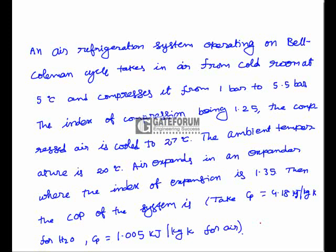An air refrigeration system operating on the Bell-Coleman cycle takes in air from the cold room at minus 5 degrees centigrade and compresses it from 1 bar to 5.5 bar, the index of compression being 1.25. The compressed air is cooled to 27 degrees centigrade. The ambient temperature is 20 degrees centigrade. Air expands in an expander where the index of expansion is 1.35. Find the COP of the system.